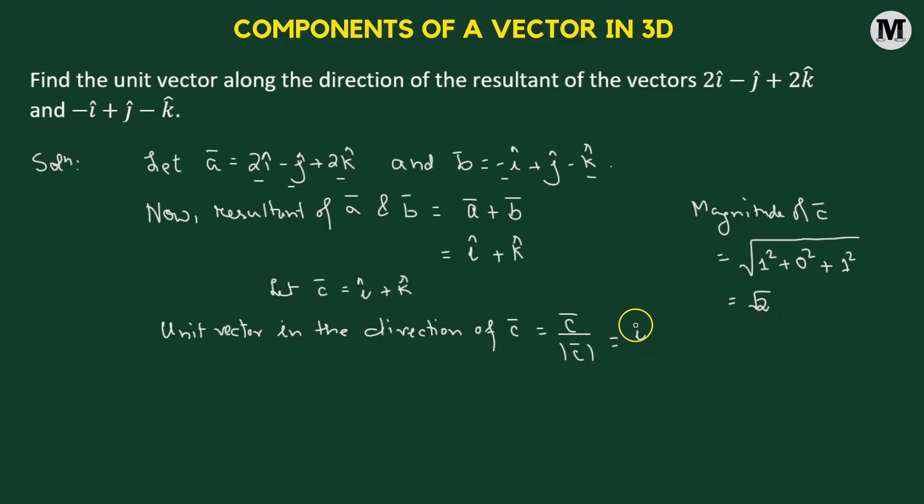That means we're going to take the vector i cap plus k cap, which is the resultant of vector a and b, and divide it by its magnitude, so that's square root of 2, which means that now we have 1 over square root of 2 times i cap added to 1 over square root of 2 times k cap. This is going to be the unit vector along the direction of the resultant of the vectors a and b.